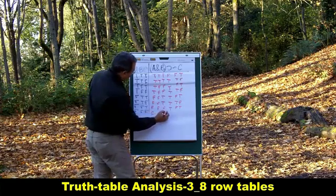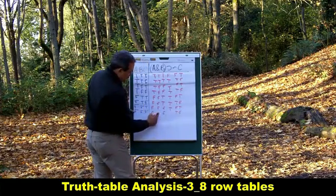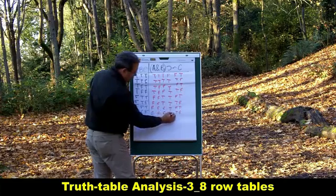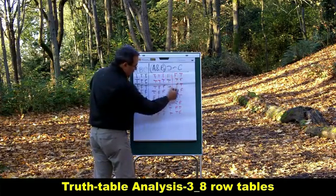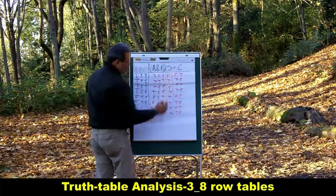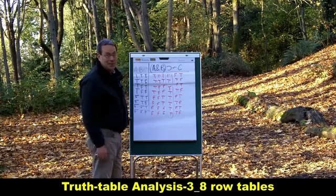And then finally, A, B, and C are all false. So the tilde will be true, the ampersand here will be false, and the main connective there, the horseshoe, is gonna be true. So here's the final column. We have at least one false, and at least one true, and that's gonna tell me this is a contingent statement.